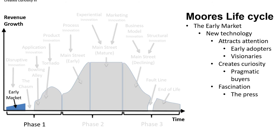Stage 1: The Early Market. When a new technology is introduced, it attracts the attention of early adopters — enthusiasts who see it as cool, and visionaries who see it as potentially disruptive. Pragmatic buyers are curious but make no commitments. The press, fascinated, writes glowing articles describing the new technology as the next big thing.